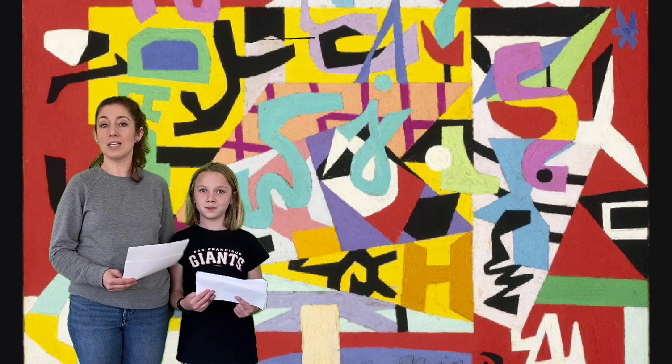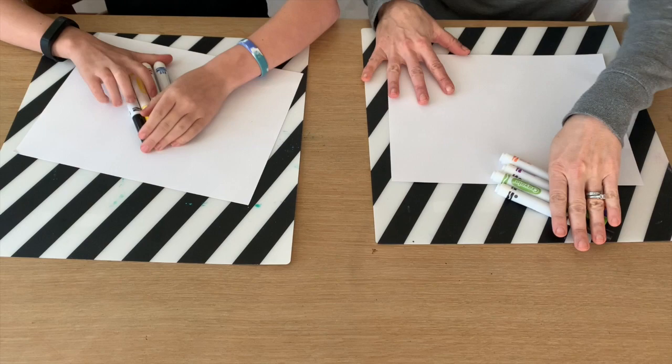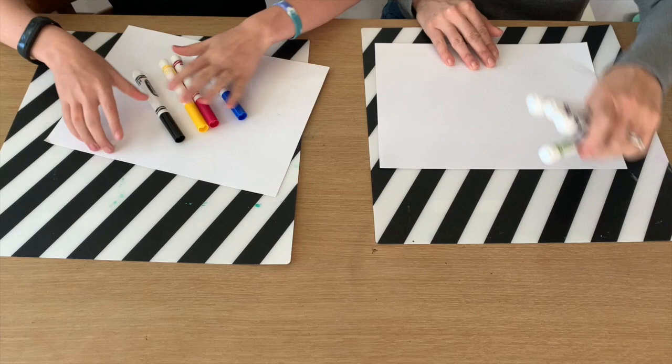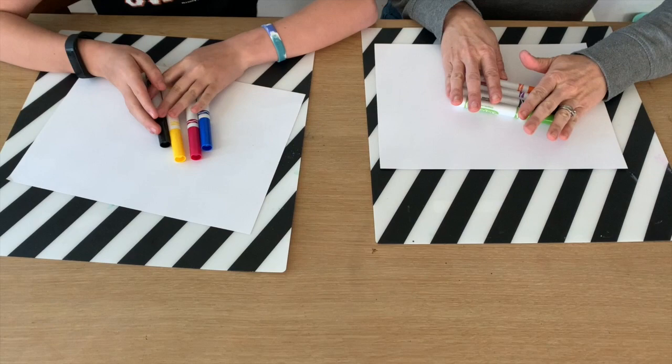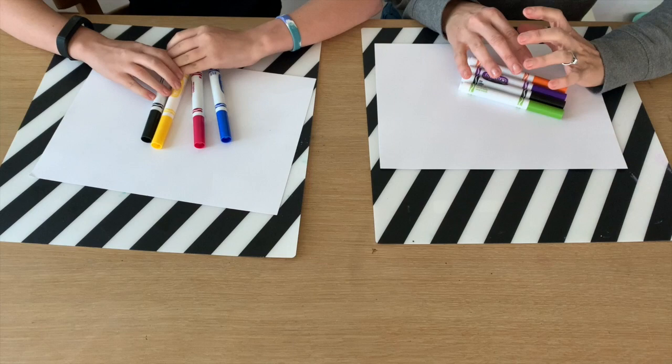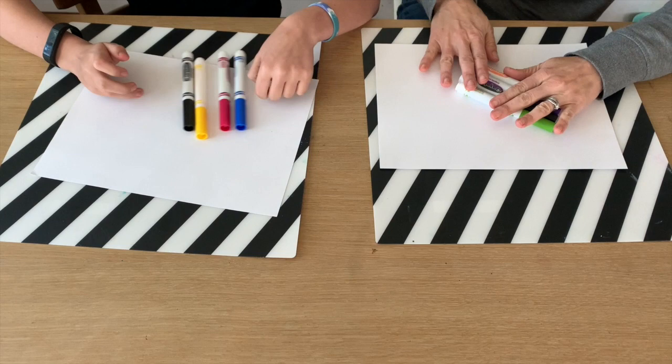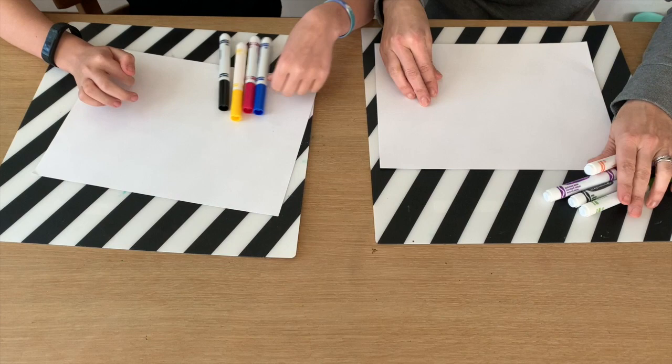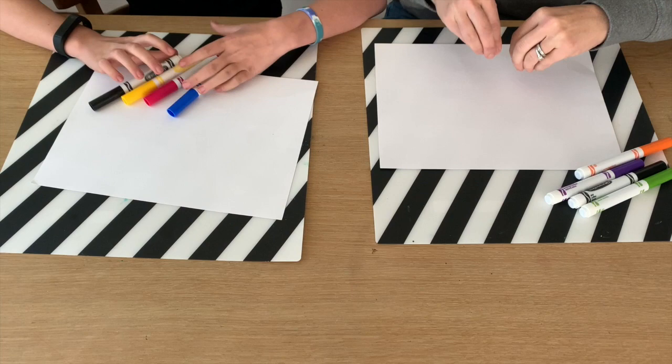Okay, for our Stuart Davis-inspired project, you're going to need your thinner white piece of paper and your markers. We're going to take shapes and letters and numbers. You can do words as long as they're polite words. You are going to take the letters and instead of just writing them normally, you can turn them and twist them and create interesting shapes and stack them in different ways.